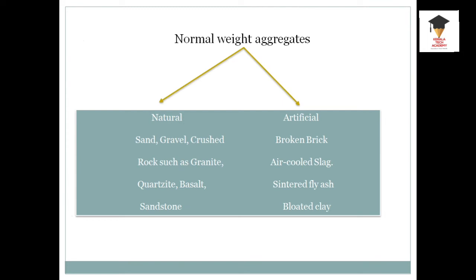Normal weight aggregates are further classified into natural aggregates and artificial aggregates. Natural aggregates relate to rock classification — metamorphic rocks, sedimentary rocks, and the classification of natural rocks.